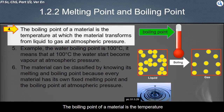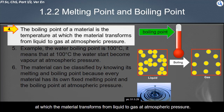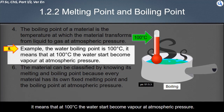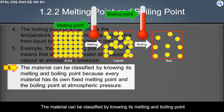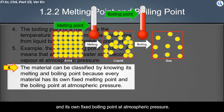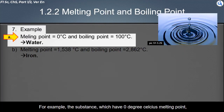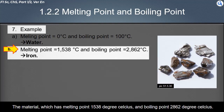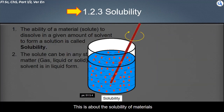The boiling point of a material is the temperature at which the material transforms from liquid to gas at atmospheric pressure. For example, the boiling point of water is 100 degrees Celsius, meaning that at 100 degrees Celsius, water starts to become vapor at atmospheric pressure. Materials can be classified by knowing their melting and boiling points, since every material has its own fixed melting point and boiling point. For example, a substance with a melting point of 0°C and boiling point of 100°C must be water, and a material with a melting point of 1538°C and boiling point of 2862°C must be iron.